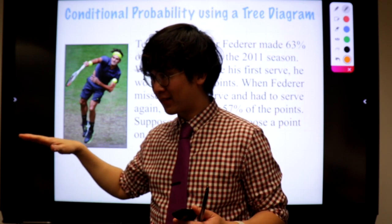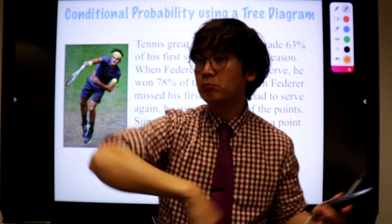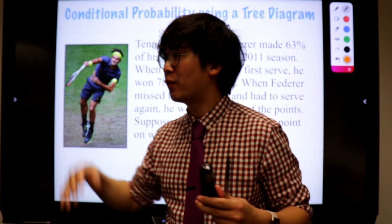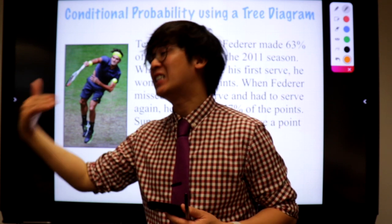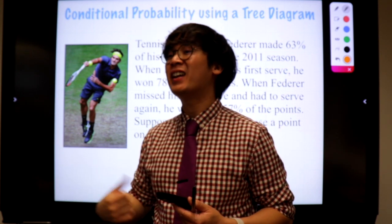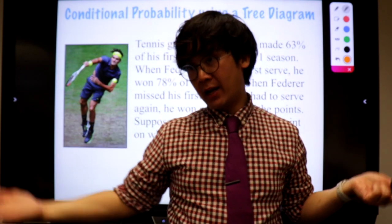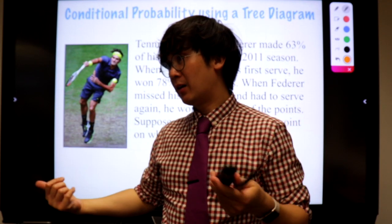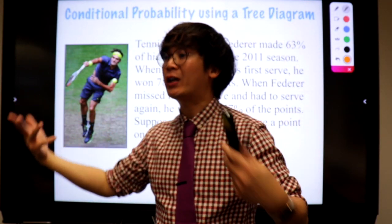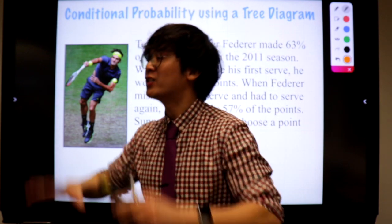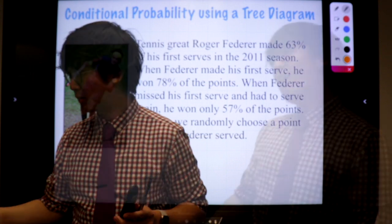If on the first serve it goes in, the game continues and you earn a point. There's a second chance in playing tennis — if you miss the first serve it's okay, because you have a second chance. You hit it on the second serve and the game continues, and you can still earn a point. That is how you earn points in a game of tennis.